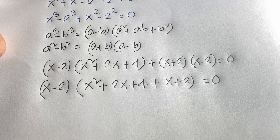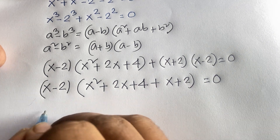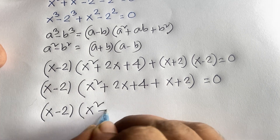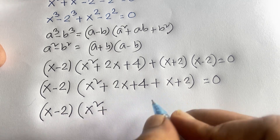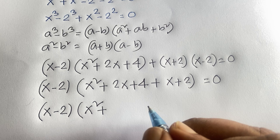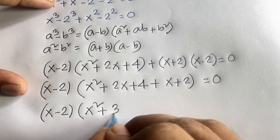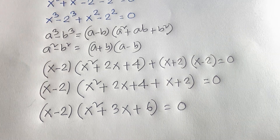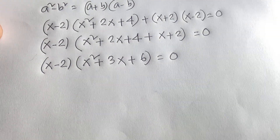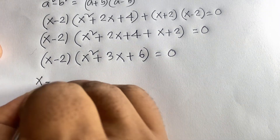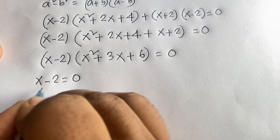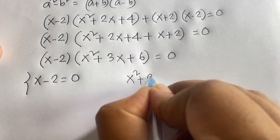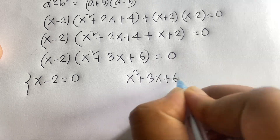Now x minus 2 is a common factor. Dividing out, we get x minus 2 times the quantity x squared plus 3x plus 6 equals 0.